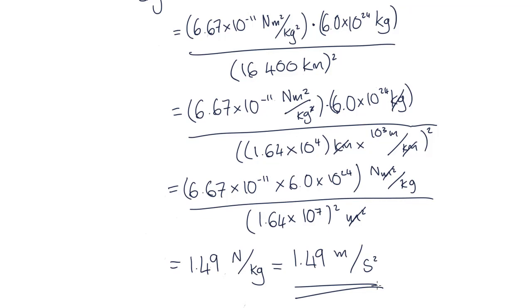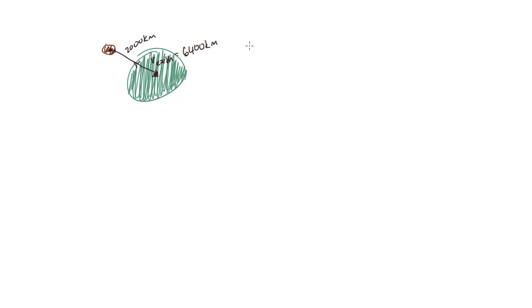Now let's find the acceleration due to gravity of the asteroid at 2,000 kilometers above the Earth's surface. Similarly to before, the r value equals the distance above the Earth's surface plus the Earth's radius, which gives us 8,400 kilometers.